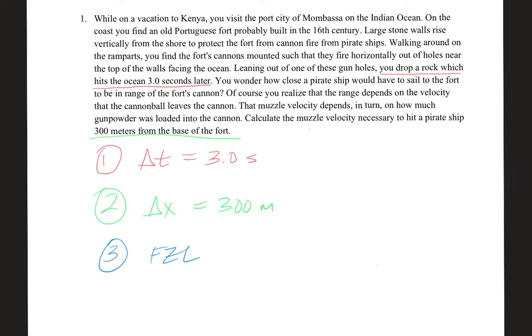So in this cannon problem, the fact that you drop a rock and it takes three seconds means you know the time of flight. And because it's a cannon that shoots horizontally, the time of flight will be the same because the falling of the cannonball under that constant acceleration will take the same amount of time, three seconds. And if it only has to go 300 meters range horizontally in that same time of flight, then it's a simple first zeroth-law computation.